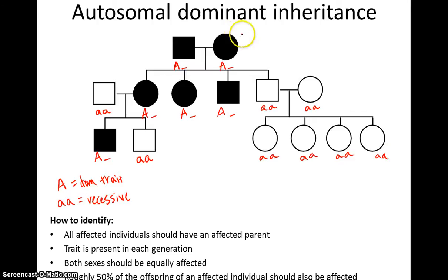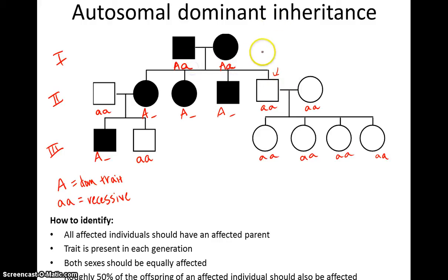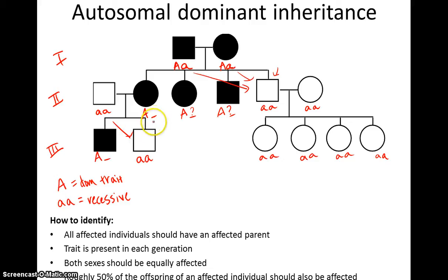Now we use logic to infer whether parents have a little a or big A for their second allele, or if we can even tell. Looking at the grandparents in the first generation, those three children don't tell me anything about the second allele, but the last child — because it's little a, little a — and you get one allele from each parent, I can tell that both parents must be big A, little a, or heterozygous.